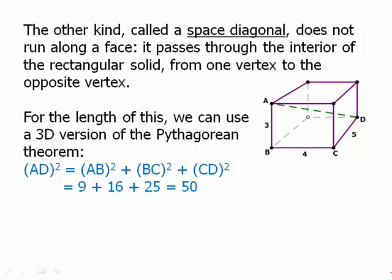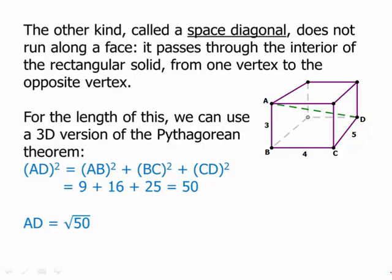So here that's going to be 9 plus 16 plus 25 equals 50. That is what AD squared is. So AD equals the square root of 50. And of course, we can factor out a 25. So that's going to be 5 root 2.